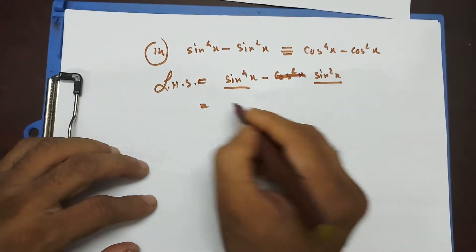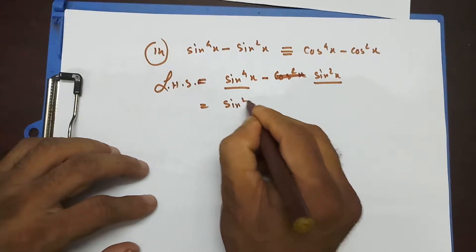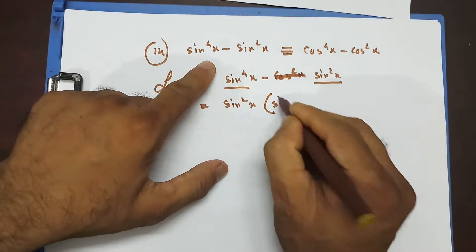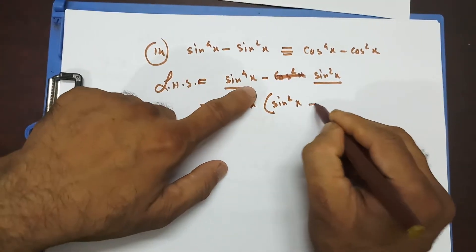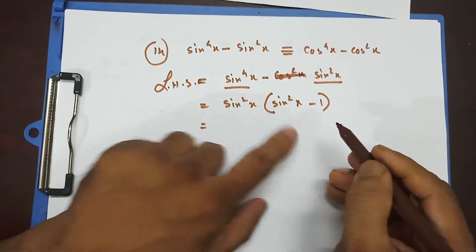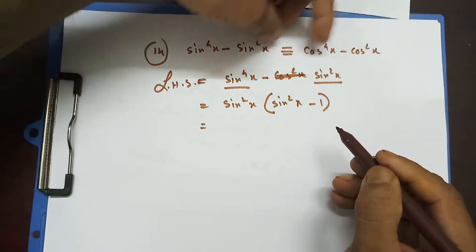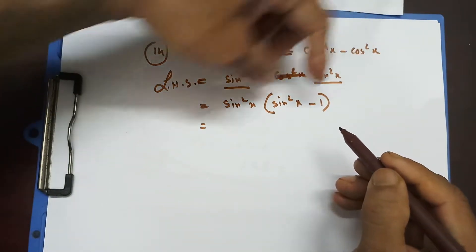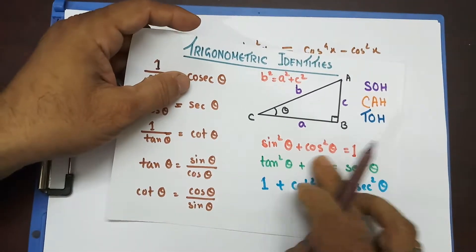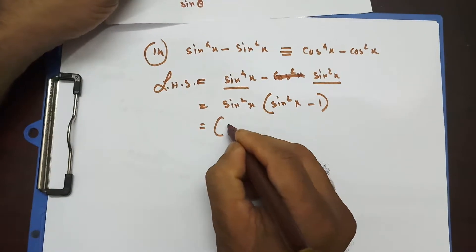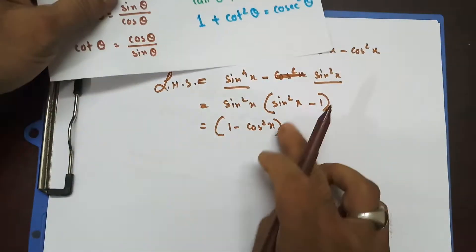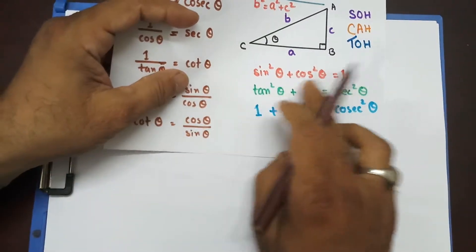If I take sin²x as a common factor, I end up with sin²x times (sin²x minus 1). Now both terms on the right hand side are in cosine, so I need to convert. Sin²θ can be replaced by 1 minus cos²x, so I write (1 minus cos²x)(sin²x minus 1).